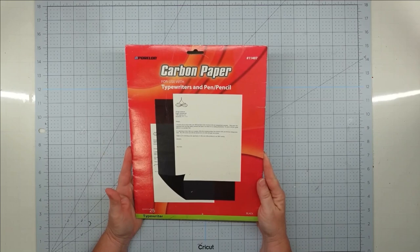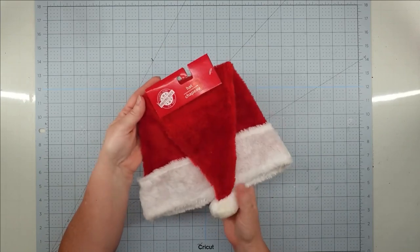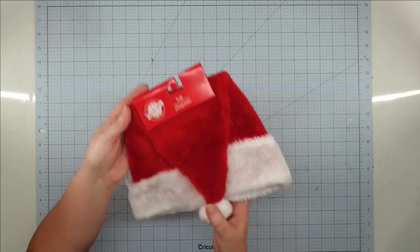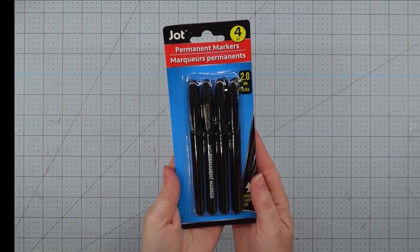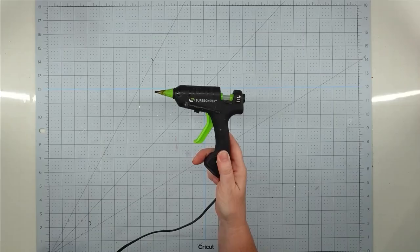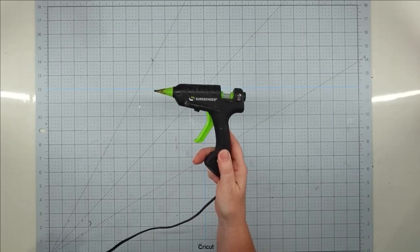Some carbon paper that I got from Office Depot but they also sell it on Amazon. A Santa Claus hat that I got from Dollar Tree last year. A permanent marker. I like these Jot permanent markers from Dollar Tree and my glue gun and some glue sticks.